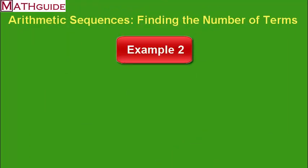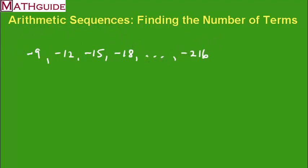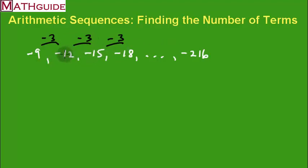Alright, a lot of little steps there. Let's try one more example. We have this sequence of numbers: negative 9, negative 12, negative 15, negative 18, and the last number is negative 216. To check if it's arithmetic, we find the difference between consecutive numbers: negative 12 minus negative 9 is negative 3, negative 15 minus negative 12 is negative 3, and so on. The common difference is negative 3.